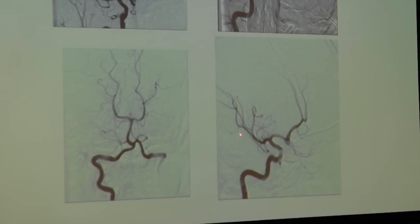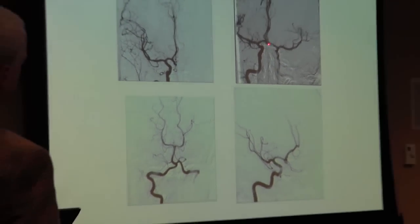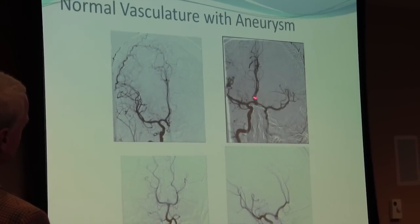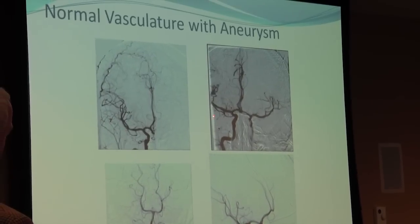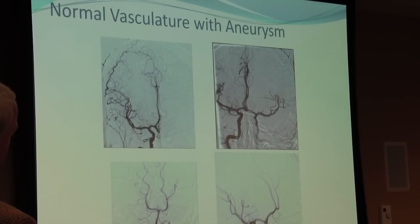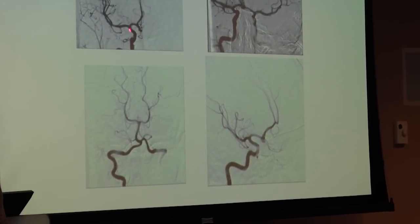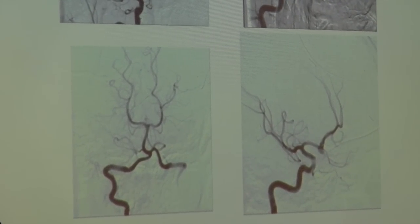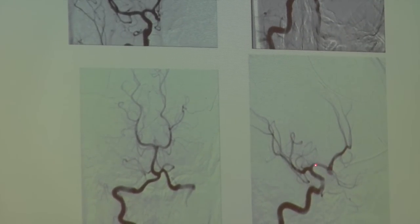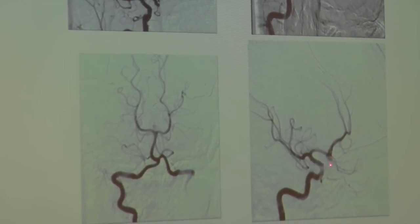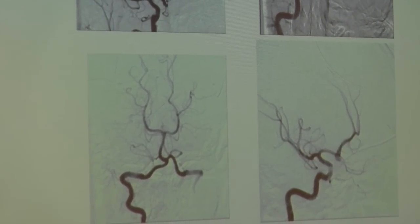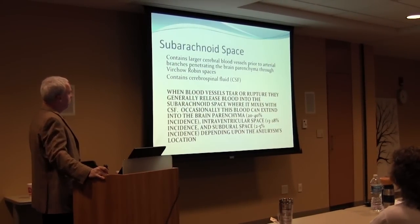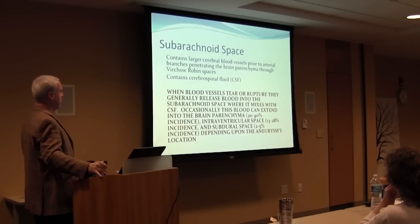Here's an example of an aneurysm that has formed at the anterior cerebral artery. You can see this dark expanded area here, and taking a different angled view, here's the middle cerebral artery, the internal carotid artery, the anterior cerebral artery. The anterior artery comes up and turns, and right where it's turning, this sac has formed — and that's an aneurysm.